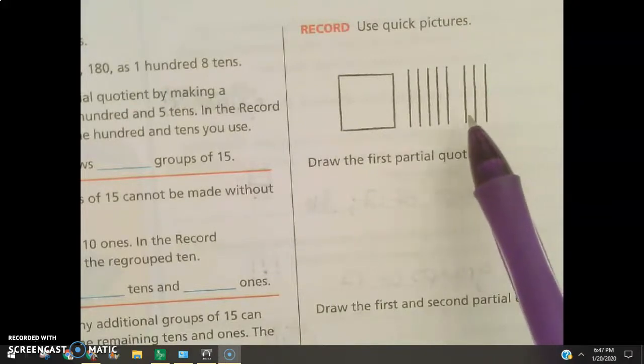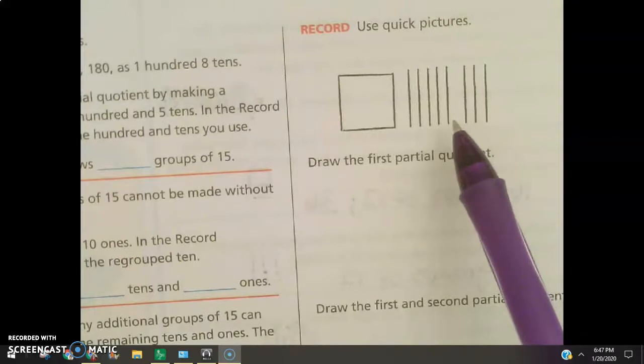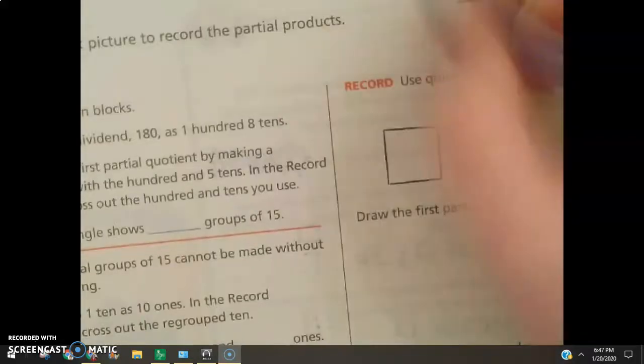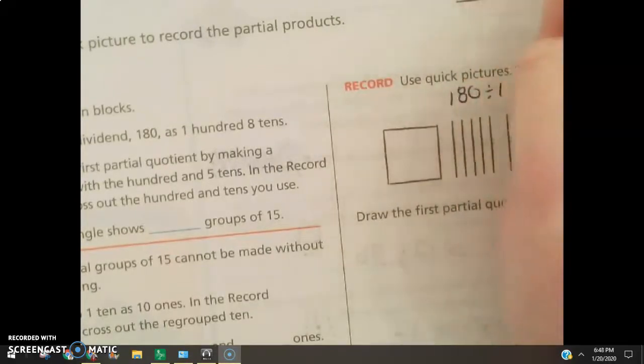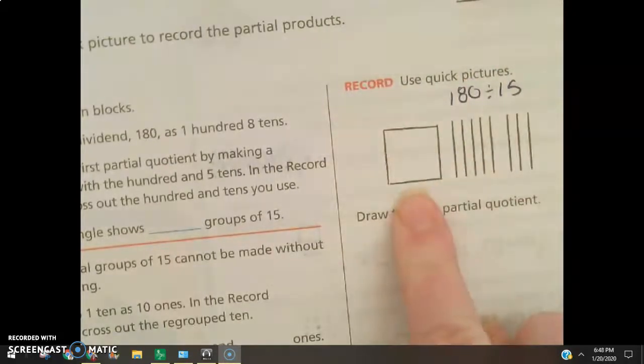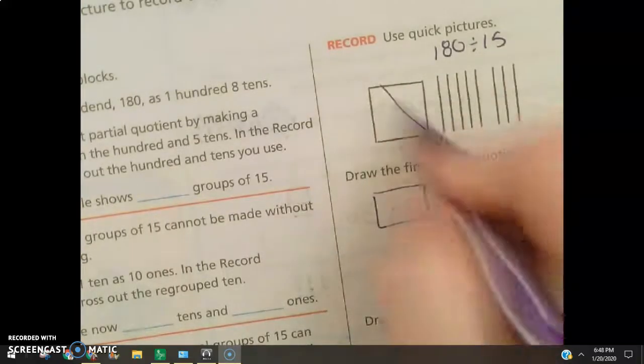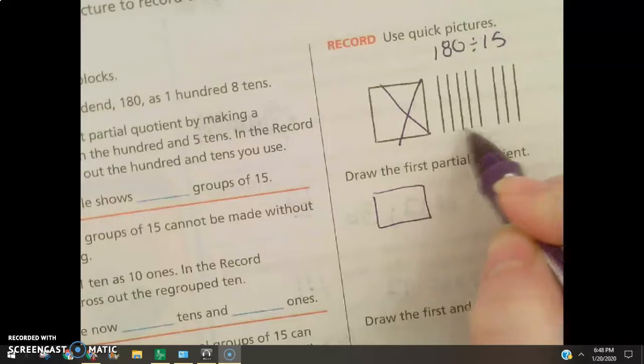But we already have 180 drawn out for us. So, now, what we need to do is draw a rectangle using groups of 15, since our problem is 180 divided by 15. So, we're going to use our big rectangle here. And then, 1, 2, 3, 4, 5.